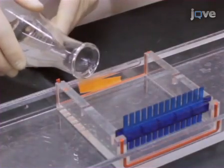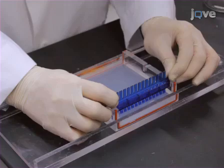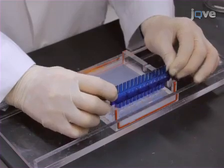Pour the molten agarose into the gel mold. Allow the agarose to set at room temperature. Once the agarose is set, remove the comb.